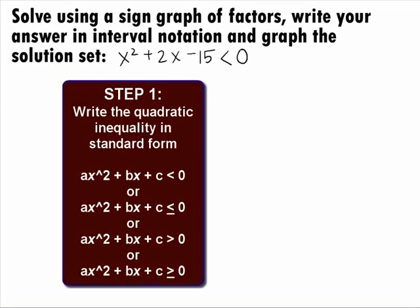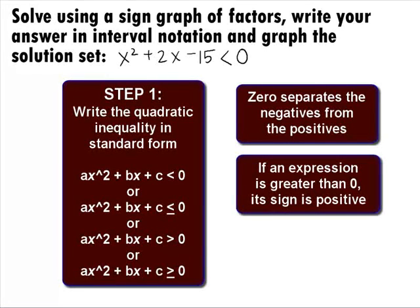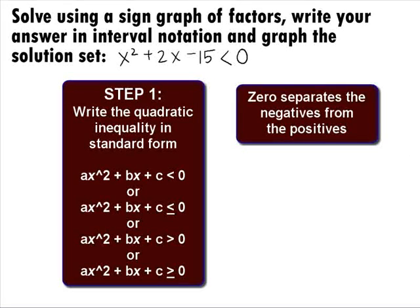In Step 1, we want to write the quadratic inequality in standard form. This means we want to set the quadratic expression either greater than or less than 0. The reason we are doing this is 0 is our magic number — it is the only number that separates the negatives from the positives. If an expression is greater than 0, then there is no doubt that its sign is positive. Likewise, if it is less than 0, its sign is negative. We cannot say this about any other number. Since we are working with inequalities, this idea will come in handy.